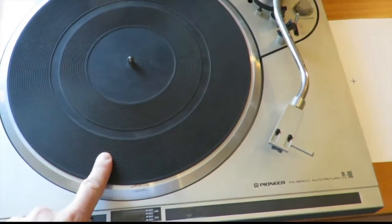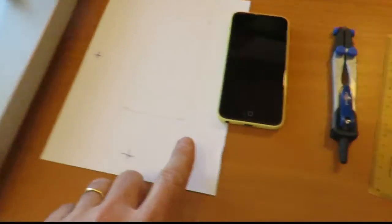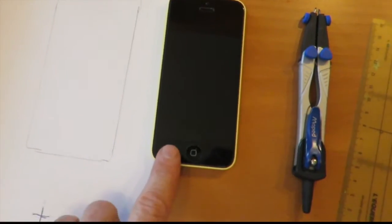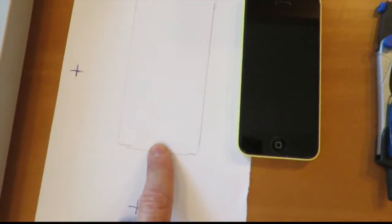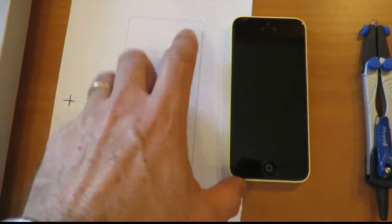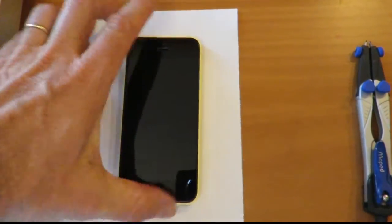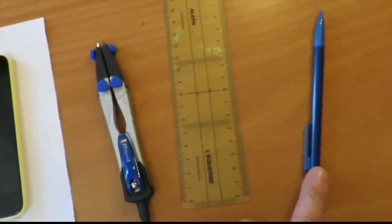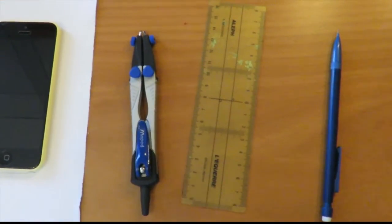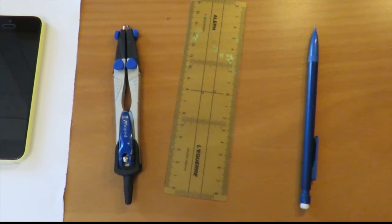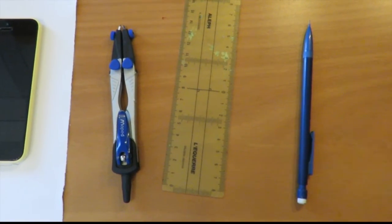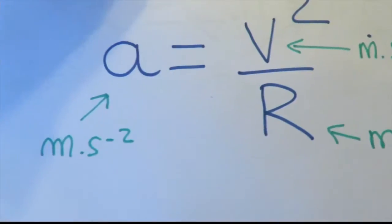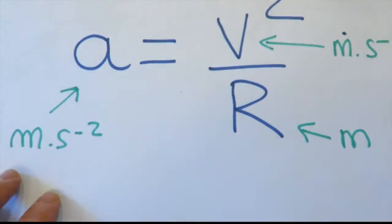So what do you need for this activity? You need a record player. Of course, you need a smartphone with the application sensor kinetics inside. Here, a piece of paper with some kind of frame which corresponds to the smartphone. A hole compass, a hole here, a pencil. And for this, you have to use the properties of the circular motion. When it is uniform, the acceleration, the radial acceleration is equal to V square divided by R.